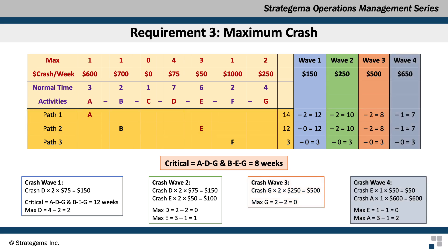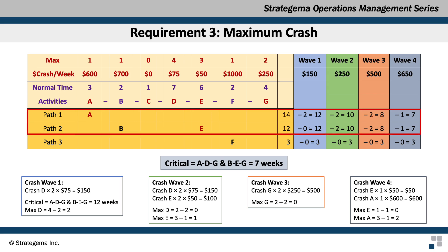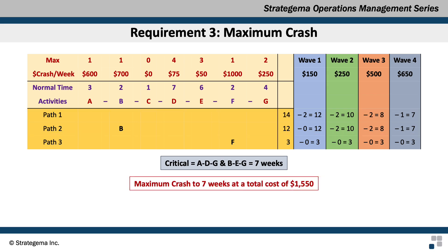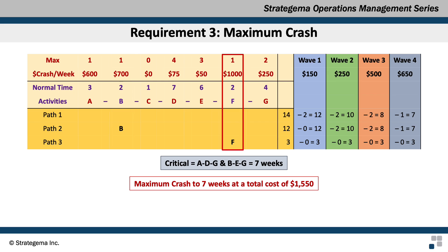For wave 4, there are no activities common to the critical paths, so we must crash different activities on each path. Activity E is available to crash by one week at $50, and activity A can also be crashed by one week at $600. This brings the project down to 7 weeks with paths 1 and 2 still critical. Activities A and E are now removed since they can't be crashed anymore, leaving only B and F. Crashing B would only reduce path 2, but path 1 is still critical at 7 weeks — so it would be wasted money. The same applies to F. Therefore, the maximum time this project can be crashed to is 7 weeks at a total cost of $650.